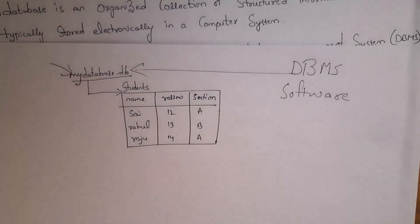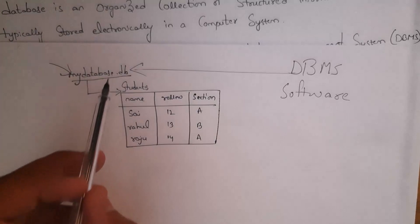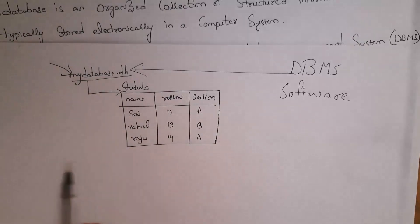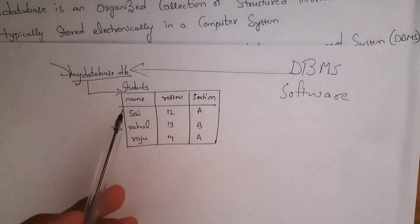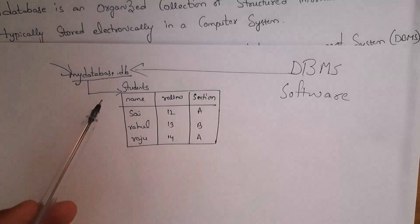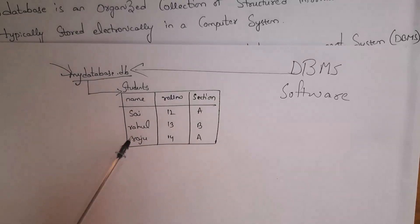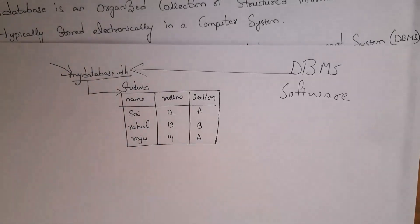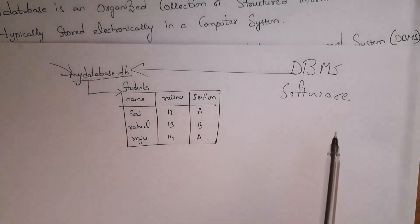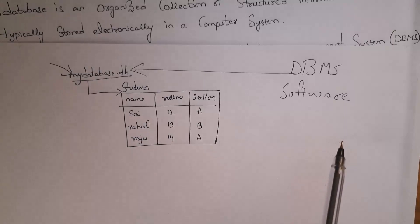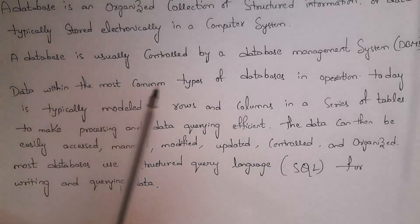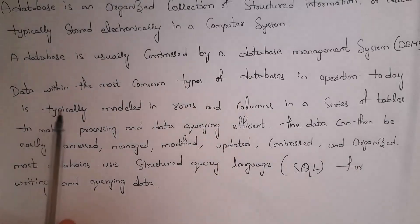For example, I want to create a database named 'mydatabase', and inside this database I want to insert a 'students' table with column names like name, roll number, and section, and insert values like Sai, Rahul, Raju, and so on. In order to create a database and perform various operations on it, we need DBMS software. By using this DBMS software we can create databases and perform various operations.